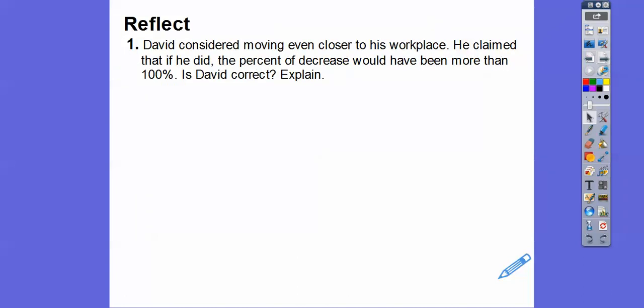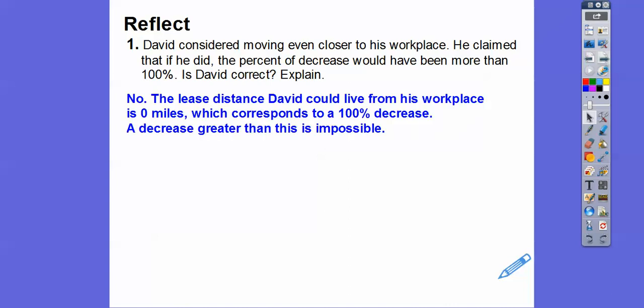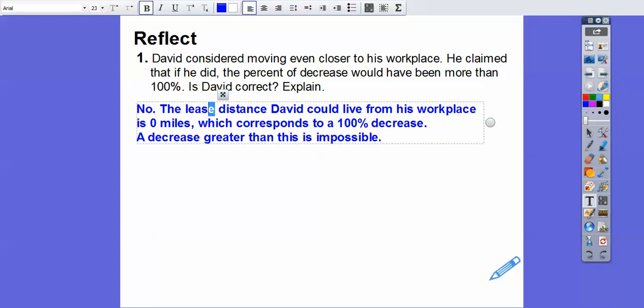David is considering moving even closer to his workplace. He says that if he did, the percent decrease would have to be more than 100%. What do you think? You think he's correct? Ah, that'd be no. The least distance David could live from his workplace is zero miles, right next door, which corresponds to a 100% decrease. A decrease greater than that is just impossible. You can't get to a distance that's greater than 100% from your old place because 100% would take you right there. Hope that makes sense.